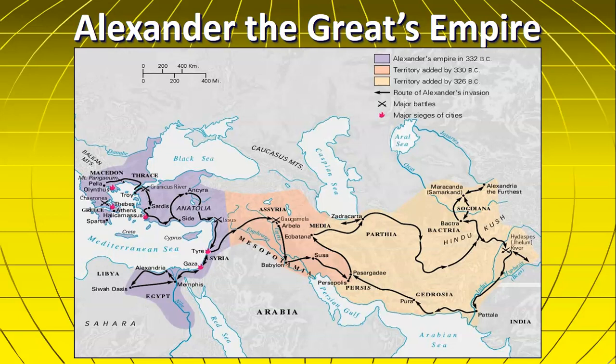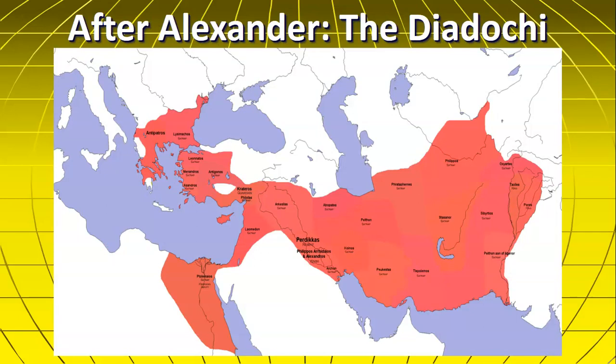Alexander conquers a huge territory — Persia, Mesopotamia, the Levant, and Greece itself — a giant empire. However, Alexander has no heir and no plan — there is no system set up to administer this giant territory. The Diadochi is the Greek word for the generals after him. After Alexander dies with no heir and no system, his entire conquered territory is divided among his generals.